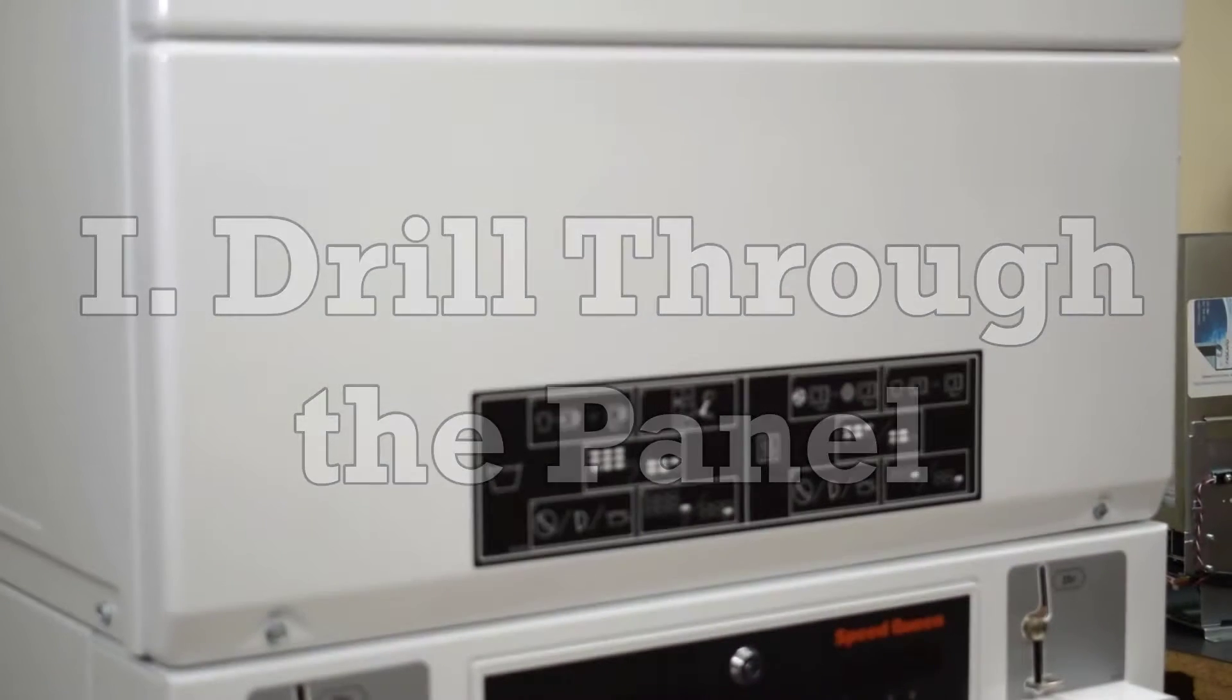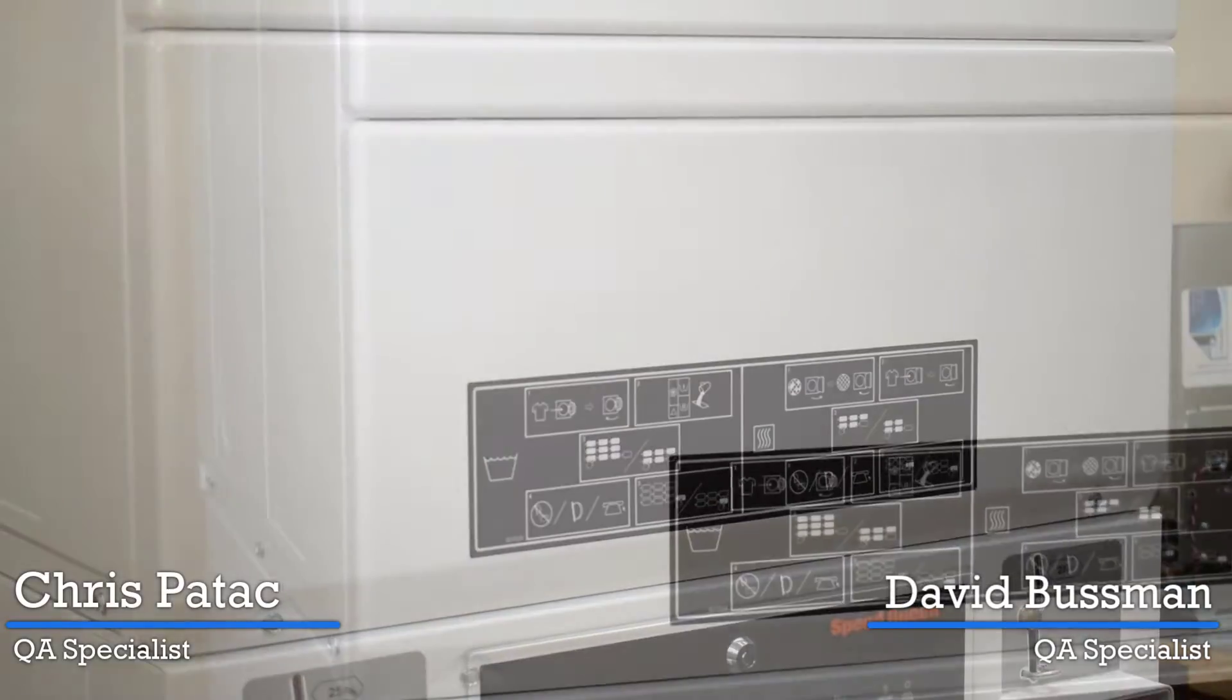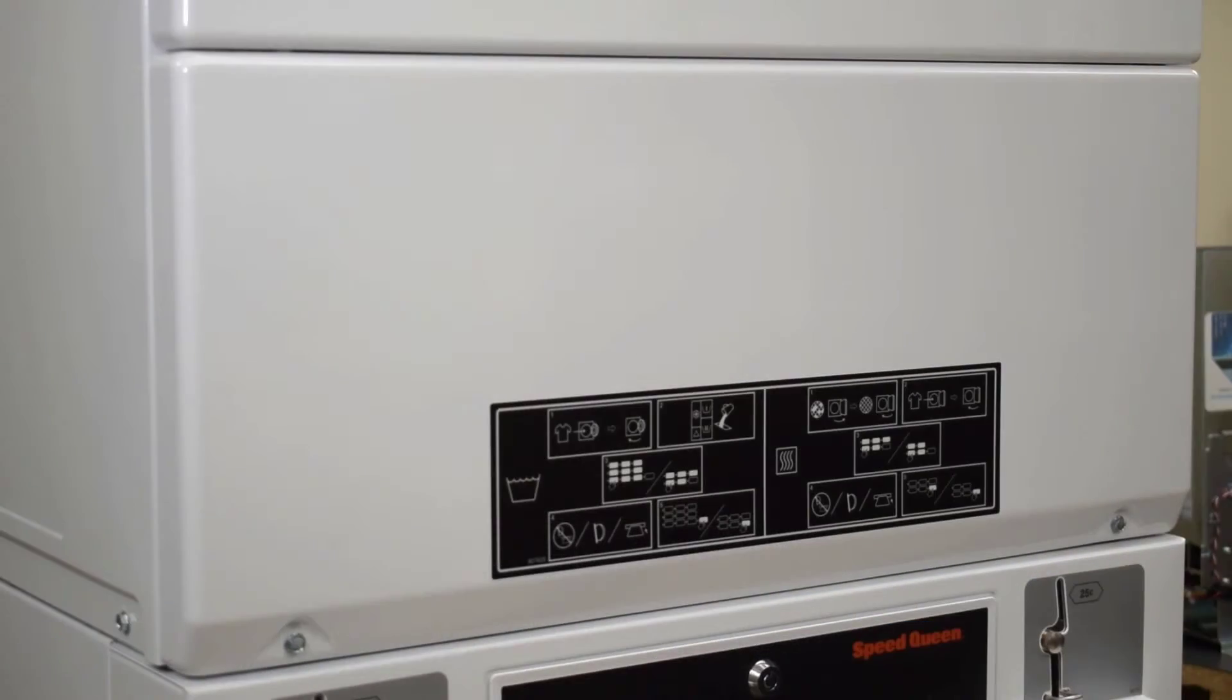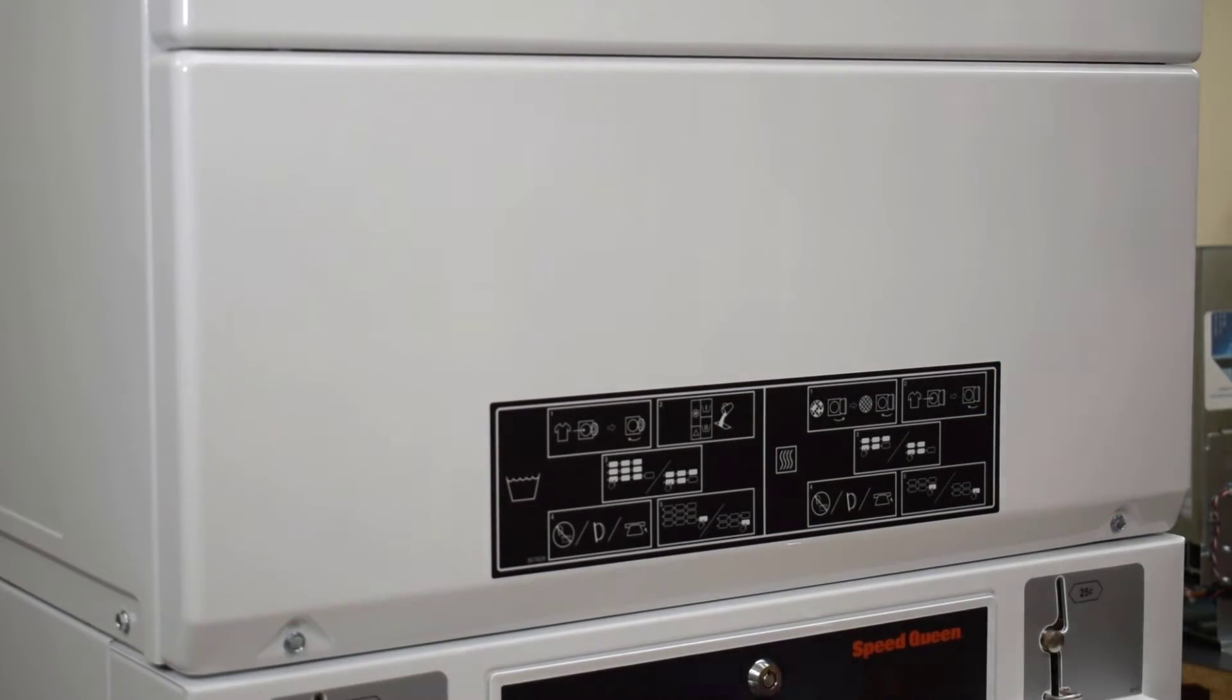While the location of drilling and mounting readers to a machine may be at an installer or technician's preference, our recommended location for the stack combo washer and dryer specifically would be above the coin drops. We also recommend drilling into the panel while it is detached to prevent shavings or debris from going into the machine.